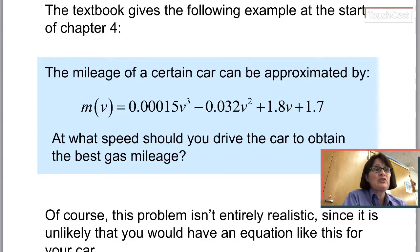Section 4.1 is about extreme values of functions. The example your book gives is a good way to get us to start thinking about this. If you had a function m(v) that told you what gas mileage you got when you drove your car at a certain speed, then you would probably want to use that function to figure out how fast should you drive your car to get the best gas mileage.